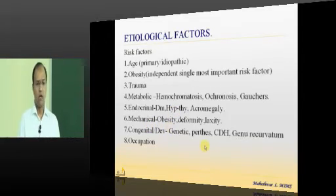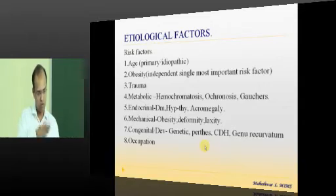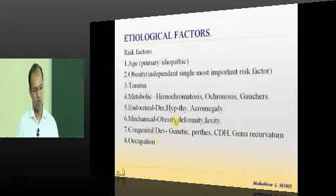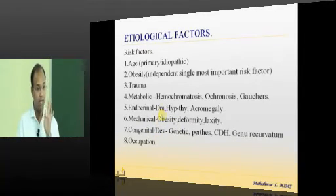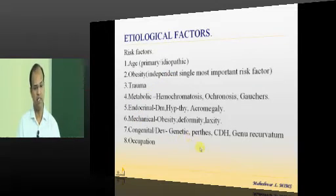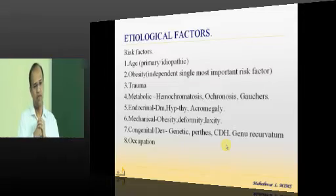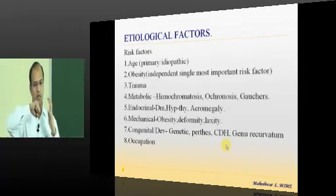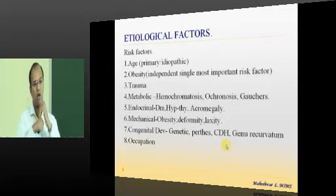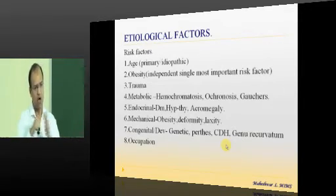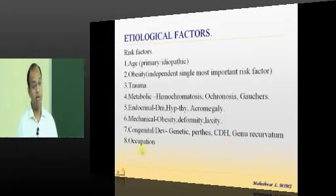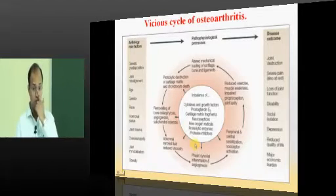Mechanical factors such as abnormal joint loading patterns lead to increased wear and tear at specific portions of the joint, predisposing to degeneration. Congenital and developmental problems — such as developmental dysplasia of the hip — cause joint incongruence, subluxation, or dislocation, producing shear forces rather than normal loading forces, resulting in early osteoarthritis. Occupation also matters: the more you use a joint, the more you damage it.